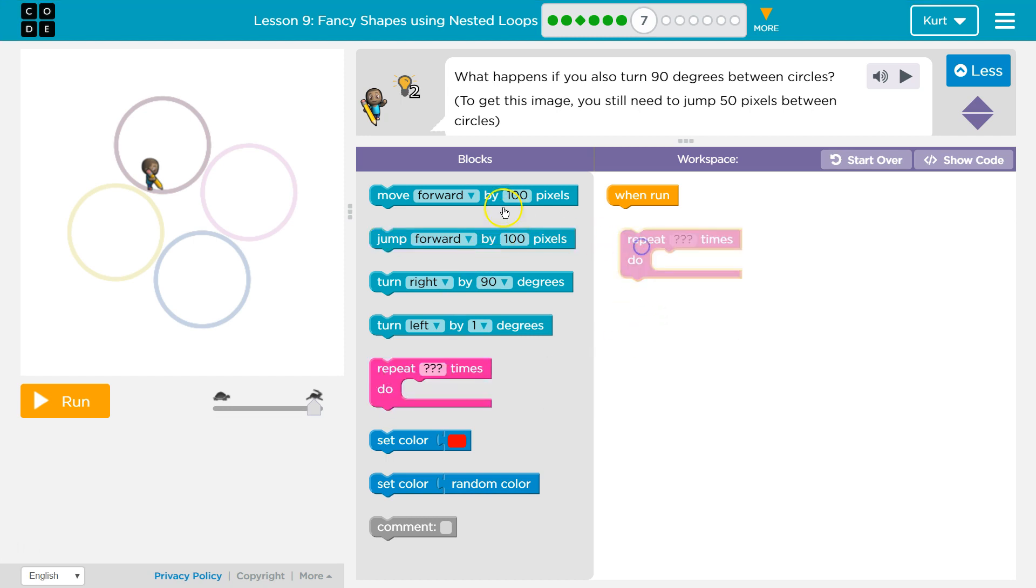We definitely need a repeat, because we're only going to draw one pixel at a time. If we wanted to draw a circle this way, we'd have to drag over 360 pieces of block, and then another 360 turning. Because you turn one degree each time, and then you want to move forward one pixel each time. You want to do that 360 times, because there's 360 degrees in a circle.